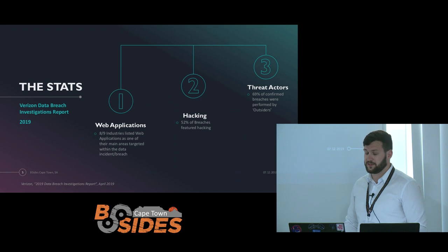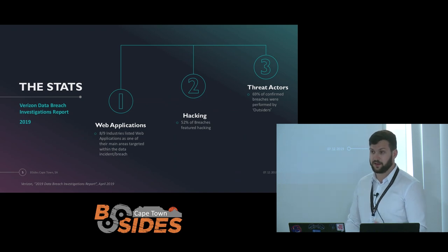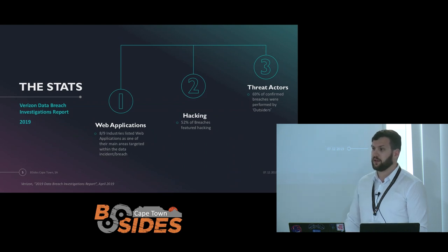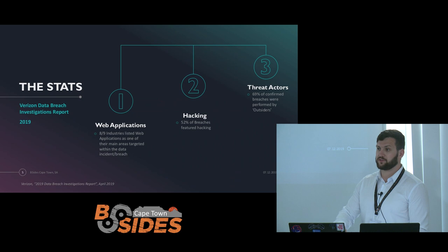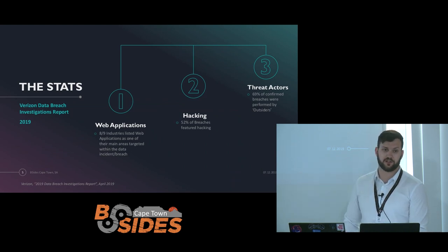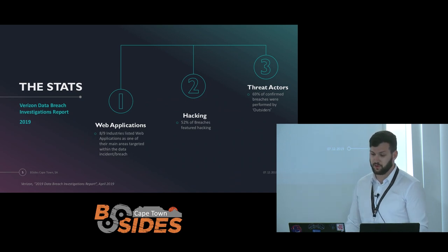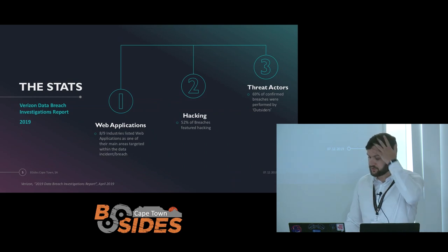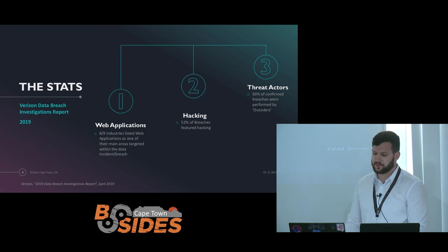The main one this year that interested me was the Verizon Data Breach Investigations Report. While reading that, I realized that a lot of the hacks that occur are still happening through external-facing web applications and networks facing the web. While insider threats get a lot of attention, we're still seeing globally a lot of damage being done through web application hacking. Eight out of nine industries listed web apps as one of their main areas targeted within the incident or breach.